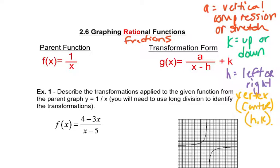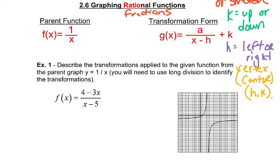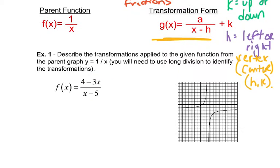So what we're going to do is actually take what we know to be a rational function and turn it into this transformation form so that we can easily identify all of these pieces. There is no a value up on top because we don't actually have one since it's written in rational form versus transformation form. We're going to need to use long division to identify the transformations.